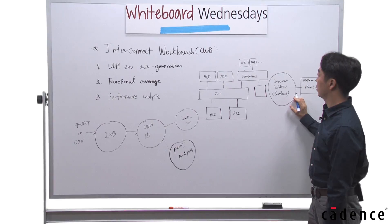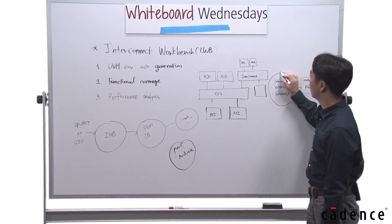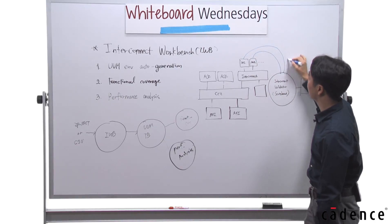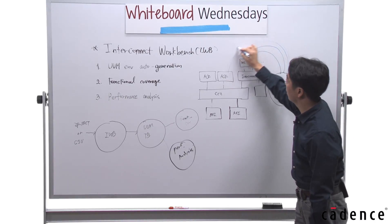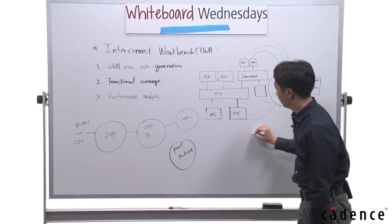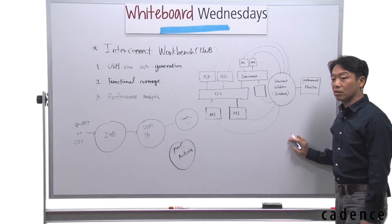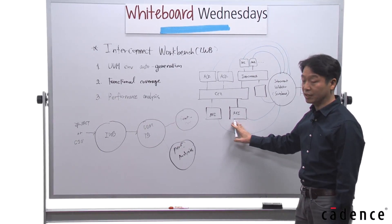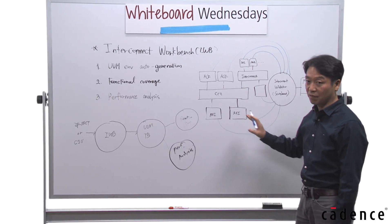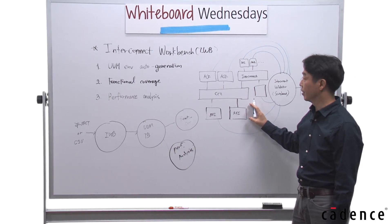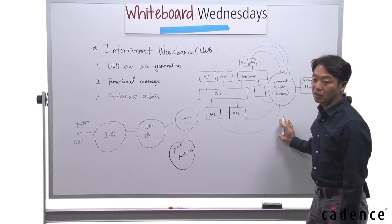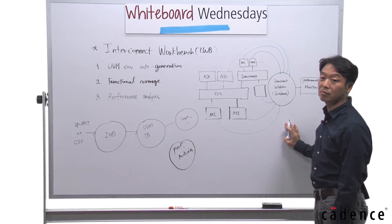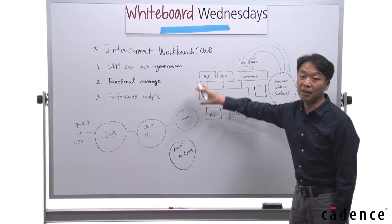The customer has to connect the IWB port to each component manually. Also, the user has to define the memory map of each component and make configurations manually. So, without IWB, the customer has to spend much time to set up this kind of verification environment.